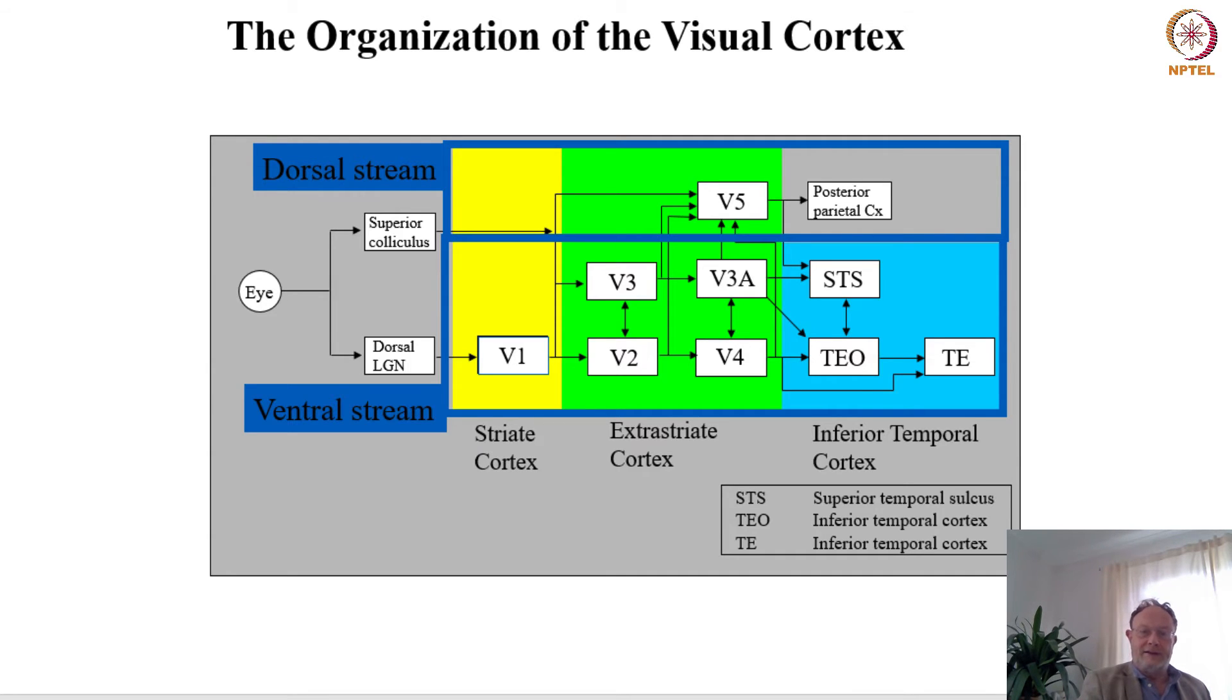One important fact is that people believe that the visual cortex has many levels. So you see the numbers here: V1, V2, V3, V4, etc. So you have many components.